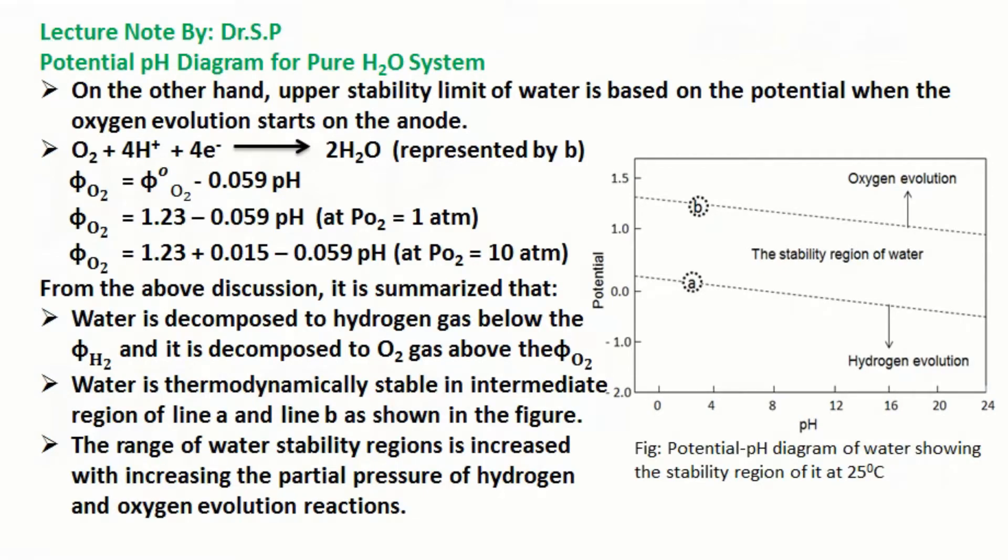Here, the oxidation half cell potential for oxygen is 1.23 minus 0.059 times pH at 1 atmospheric pressure and 1.23 plus 0.015 minus 0.059 times pH at 10 atmospheric pressure.